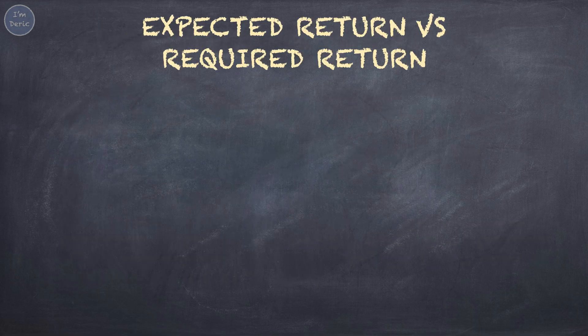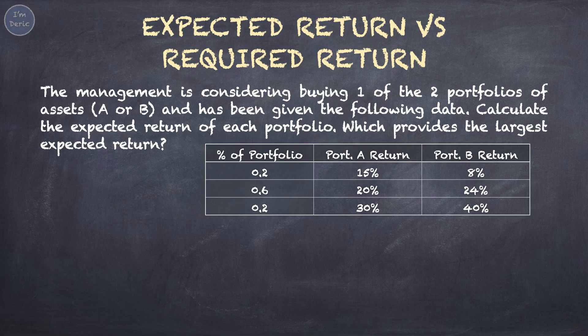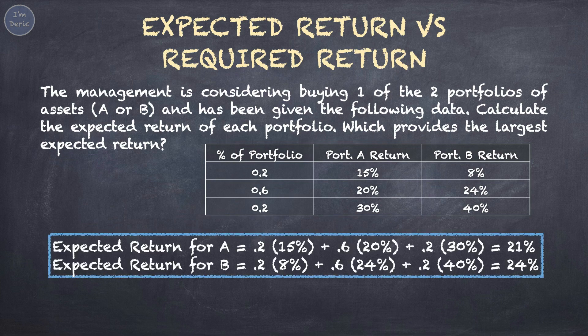Let's look at another example. Management is considering buying one of two portfolios of assets, A or B, and has been given the following data. Calculate the expected return of each portfolio, and identify which provides the largest expected return. Based on the formula, the expected return for portfolio A equals 21%, while the expected return for portfolio B equals 24%. Therefore, portfolio B provides the largest expected return.